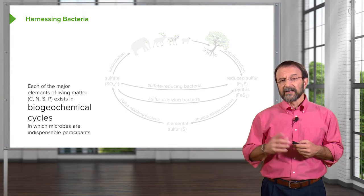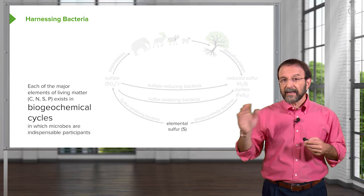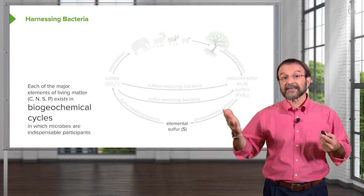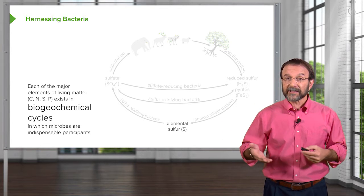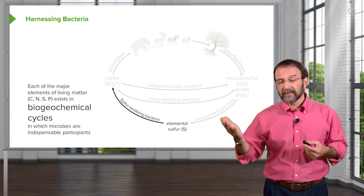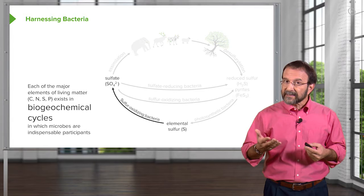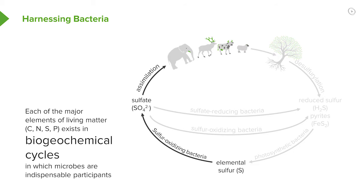Let's start at the bottom of this cycle, where we have what's called elemental sulfur, represented as S. There are bacteria called sulfur-oxidizing bacteria that convert elemental sulfur to sulfate, and that's needed so it can be used by animals and plants. We can't use elemental sulfur, but we take advantage of the fact that bacteria can produce a form of sulfate that we can use.